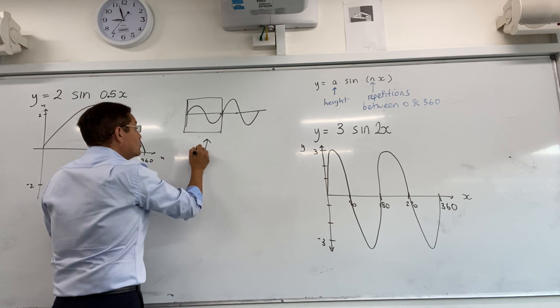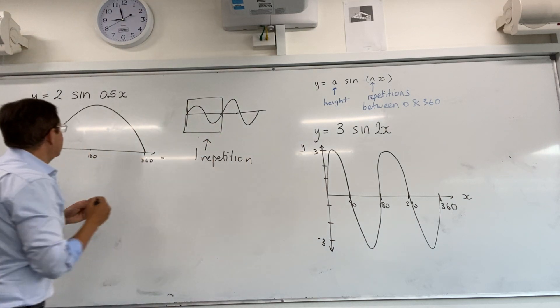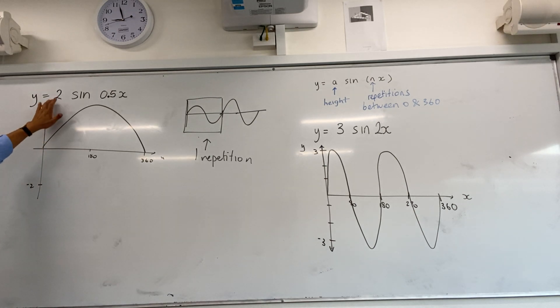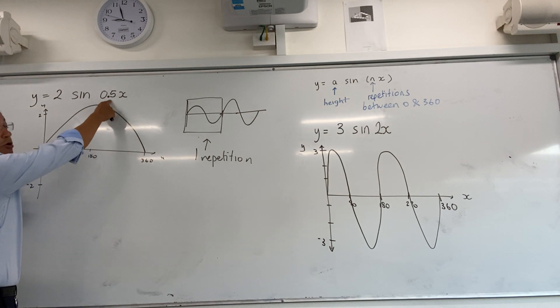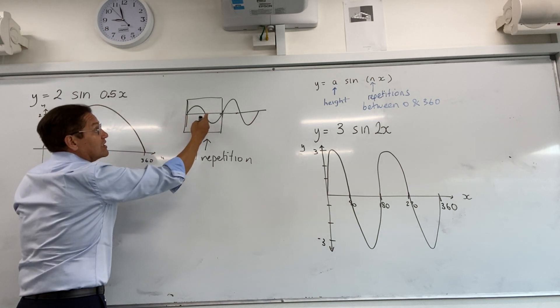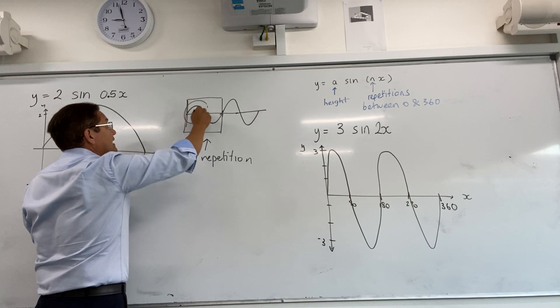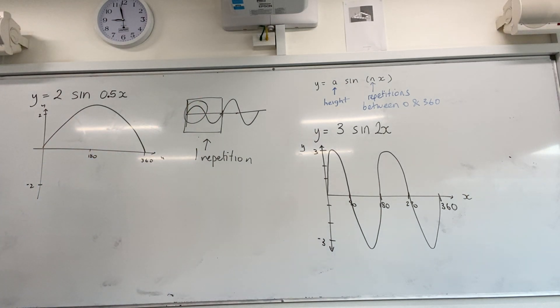Now what this is here, it's going to go up to 2 and down to minus 2, but between 0 and 360 you're only going to get half a repetition. So what would you just go? That. So you go the first half.